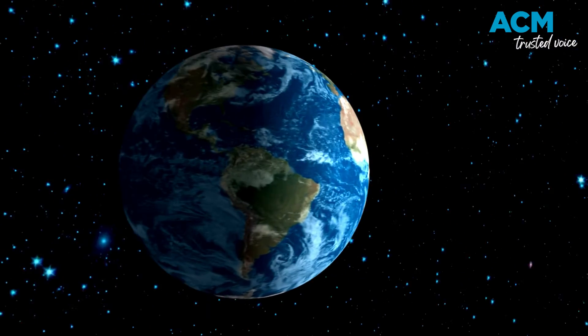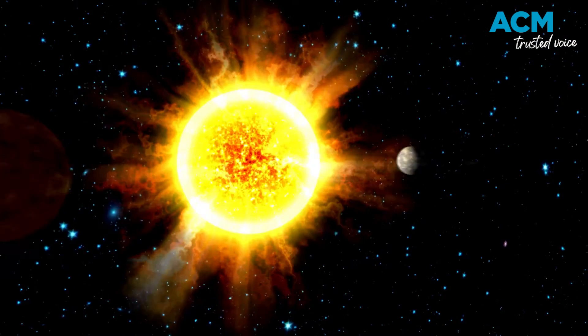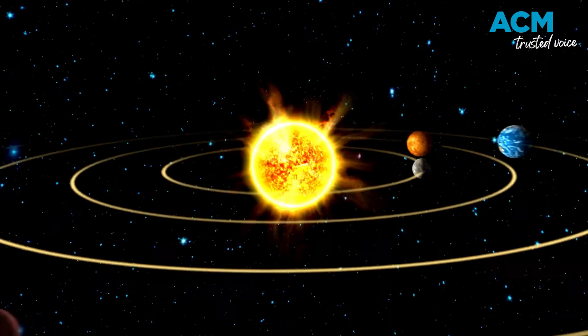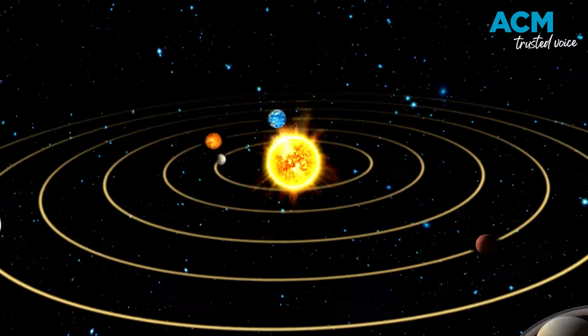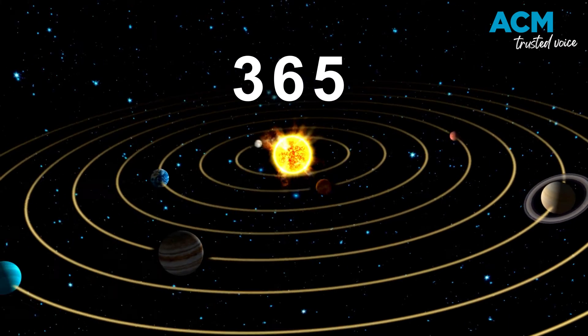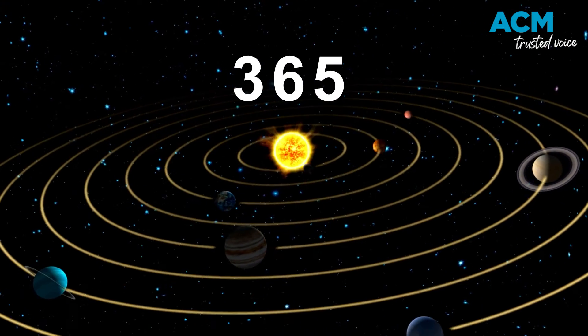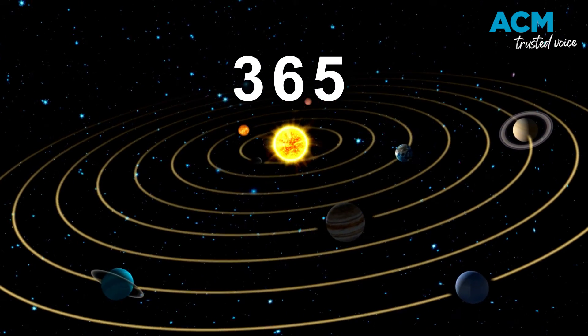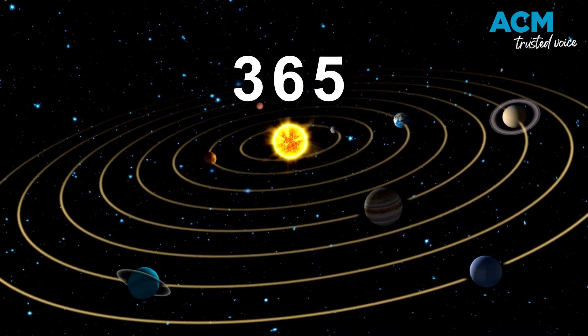That all comes down to the rotation of the Earth and its orbit around the Sun. Our calendar years measure the time it takes the Earth to orbit the Sun, which we round to 365 days.